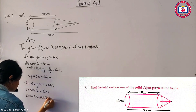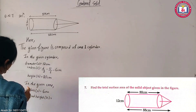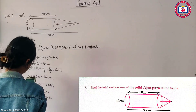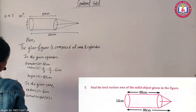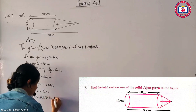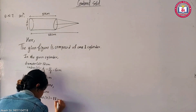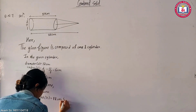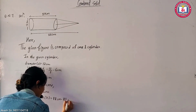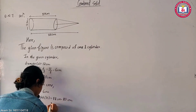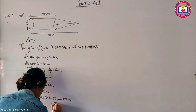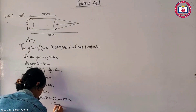The total height is 88 cm. The cone height is 8 cm.